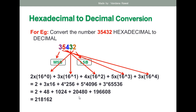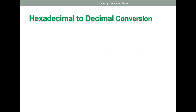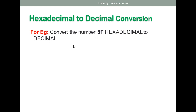Try to solve it by yourself and you will get the correct answer. Now let's do one more example. Convert the hexadecimal number 8F into decimal. First of all, write the hexadecimal number with base 16. Then in step one, write the numerical equivalent of F — since F is equivalent to 15.